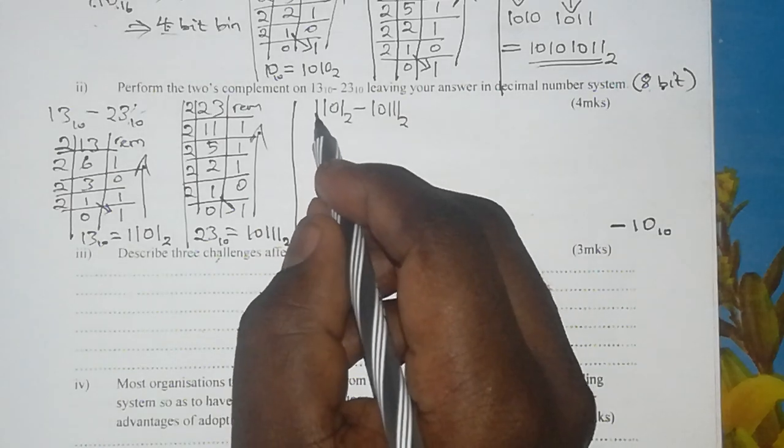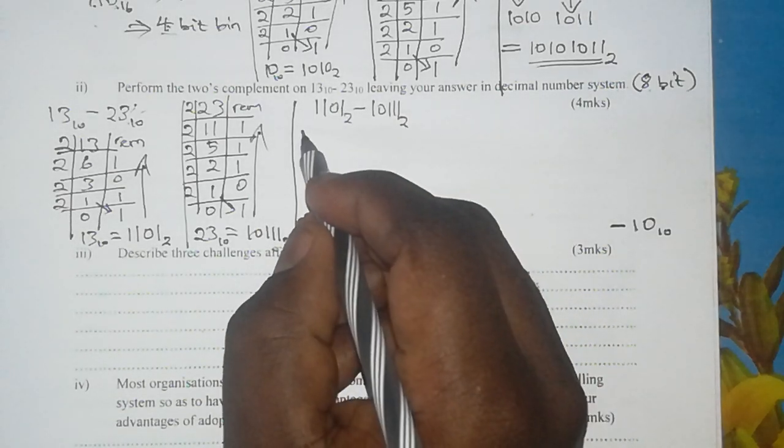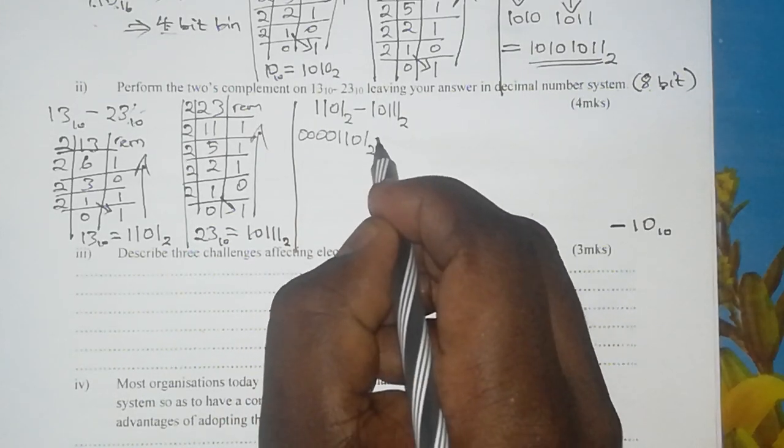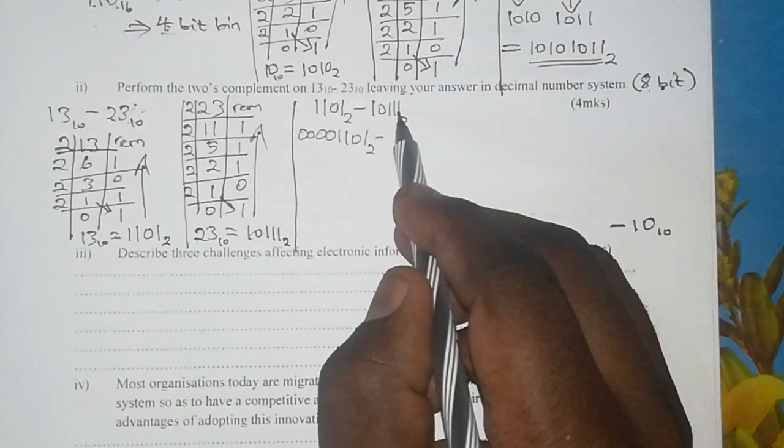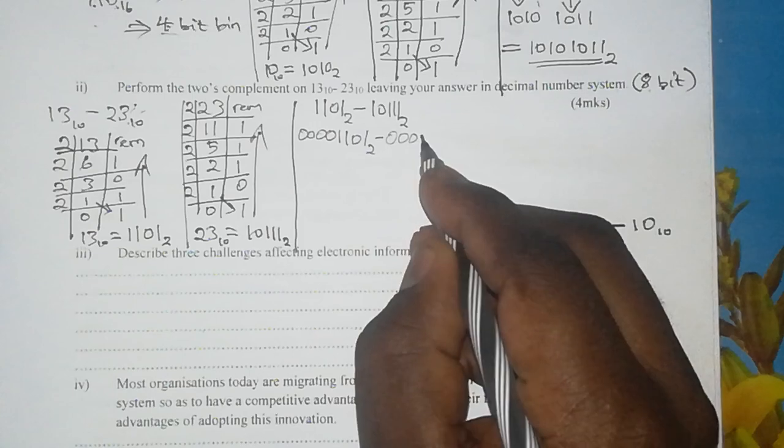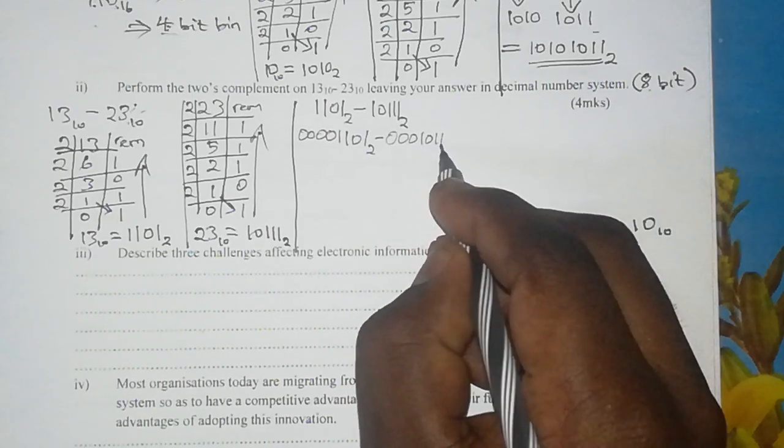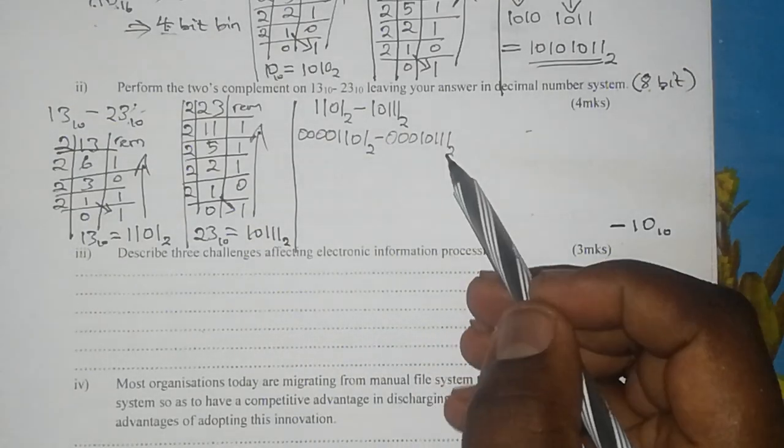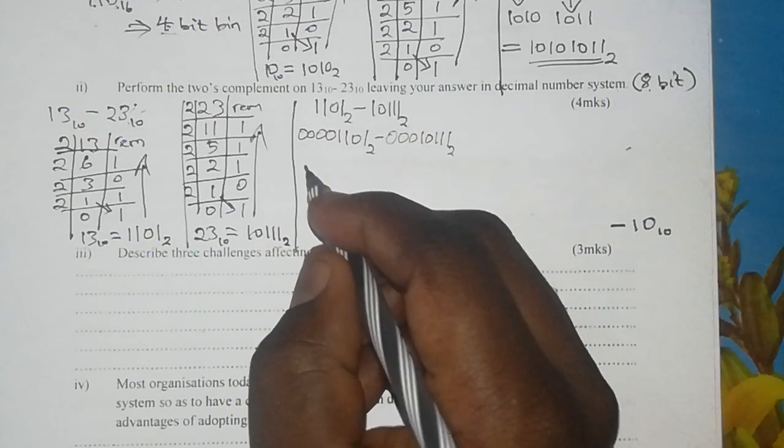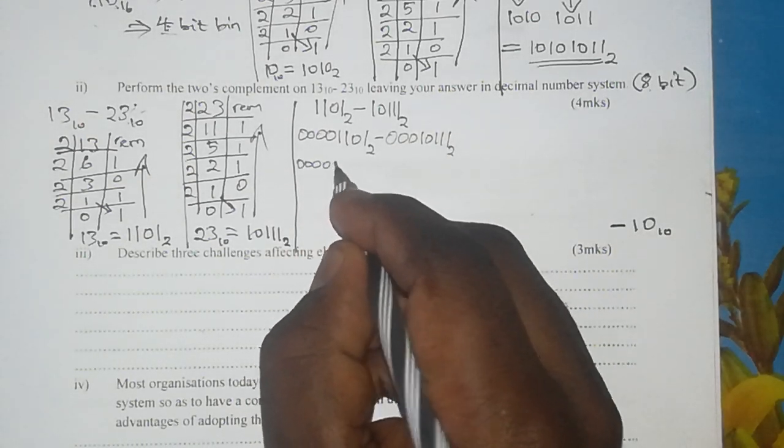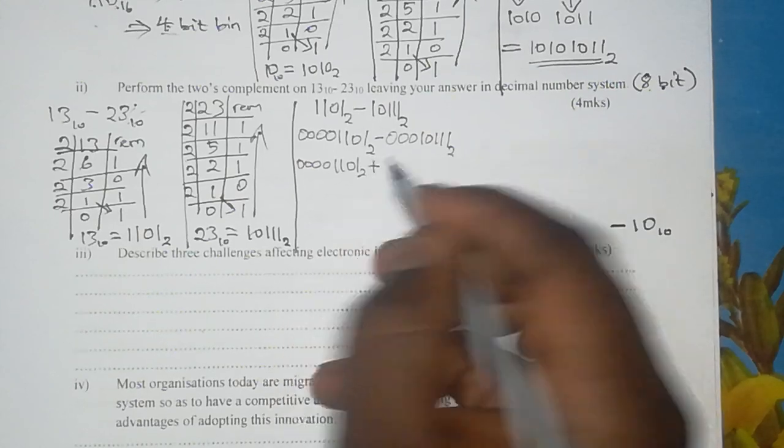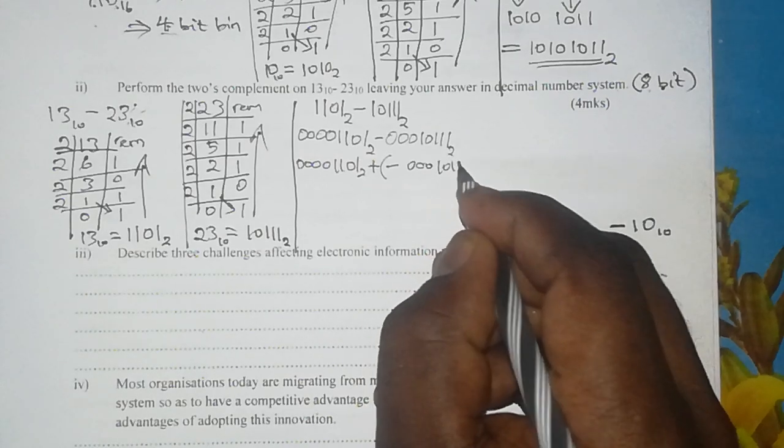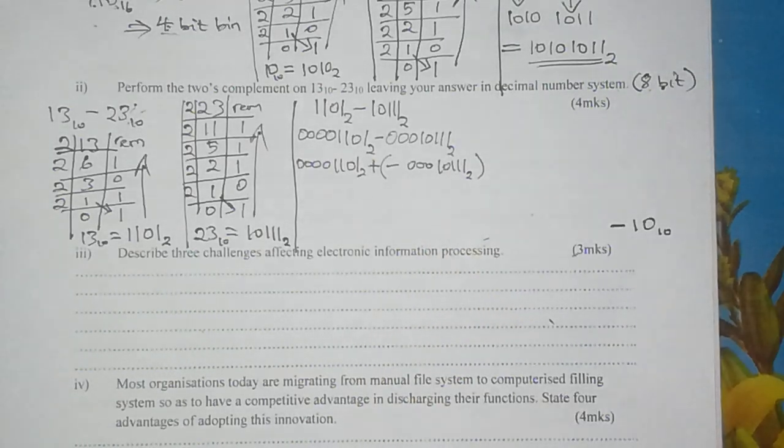Minus the second number—the negative number has 5 bits, so we need 3 zeros to make it 8 bits. Now from here going forward we deal with the negative number. We can even rewrite the sum as this plus negative 00010111 base 2. Our negative number in the brackets is what we are going to convert into a 2's complement version of it.